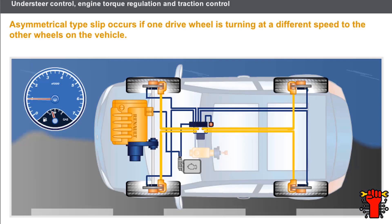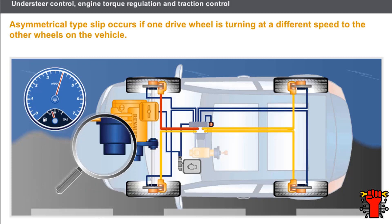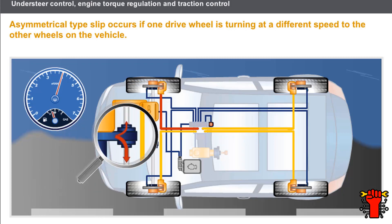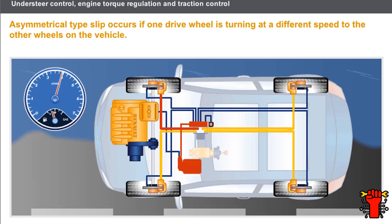Asymmetrical type slip occurs if one drive wheel is turning at a different speed to the other wheels on the vehicle. This situation occurs, for example, when one wheel is on tarmac and the other wheel is on ice. The computer for the electronic stability program controls the braking for the wheel that is slipping. The excess torque is transferred, via the differential, to the wheel with the best grip. At the same time, the computer reduces the engine torque if the braking action proves to be insufficient.